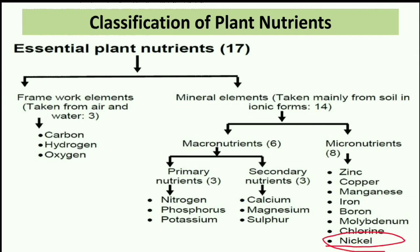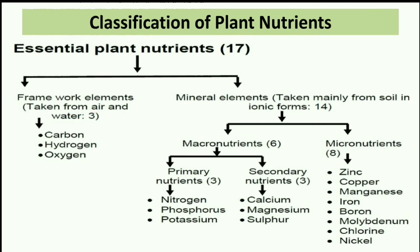Now we will talk about the classification of plant nutrients. The first category is basic nutrients — CHO, that is carbon, hydrogen and oxygen. These nutrients provide a proper framework for plants and are known as basic elements.